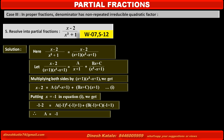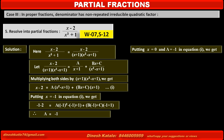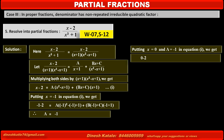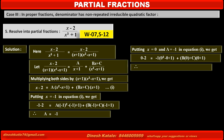Now, to find the value of C, we make the term involving B equal to zero by putting x equal to 0 and A equal to minus 1 in equation 1. The left-hand side becomes 0 minus 2, and the right-hand side first term becomes minus 1 into (0 squared minus 0 plus 1), plus B times 0, plus C times (0 plus 1). Solving, we get C equal to minus 1.